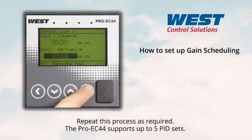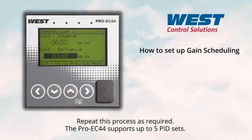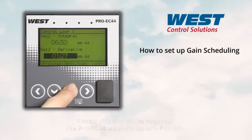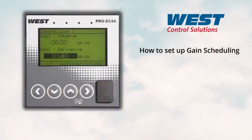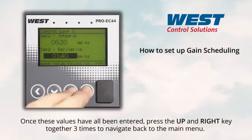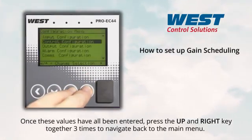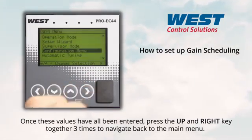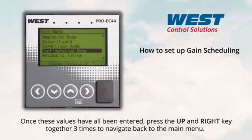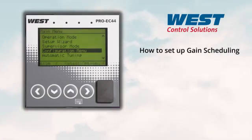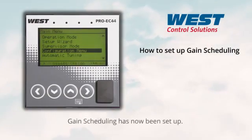The ProEC44 supports up to five PID sets. Once values have been entered for the required PID sets, press the up key and right key together three times to navigate back to the main menu.